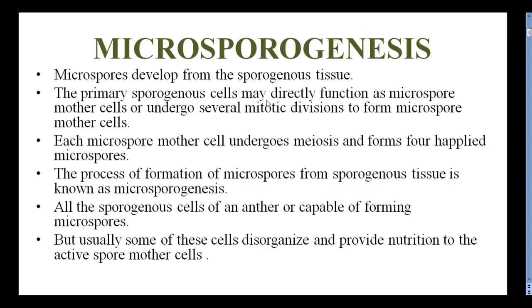The process of formation of microspores from the sporogenous tissue is known as Microsporogenesis. All the sporogenous cells of an anther are capable of forming microspores. But usually some of these cells disorganize and provide nutrition to the active spore mother cells. They degenerate and provide nutrition for the development of microsporogenesis.